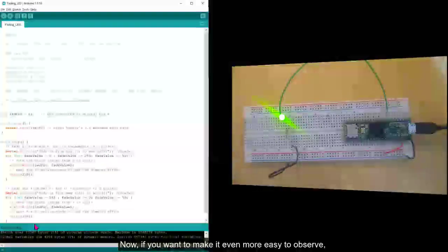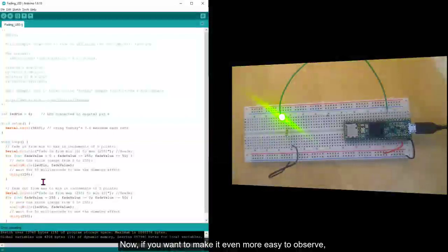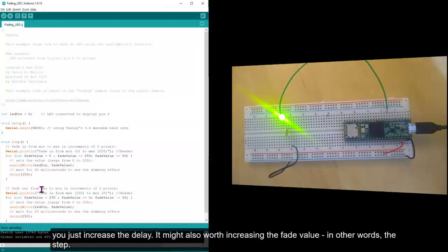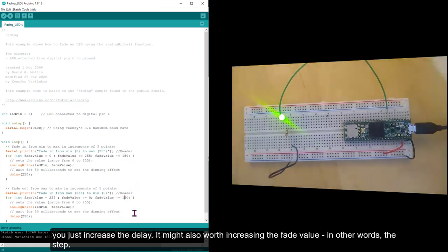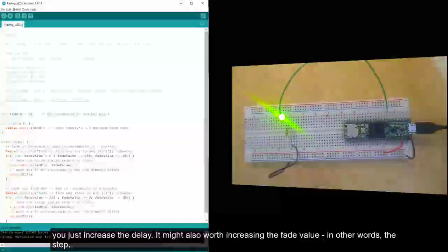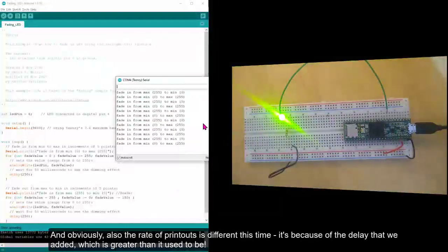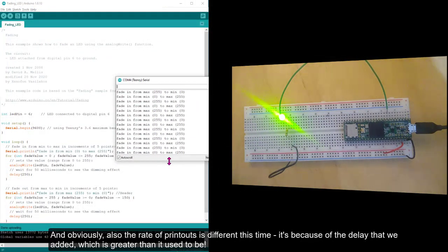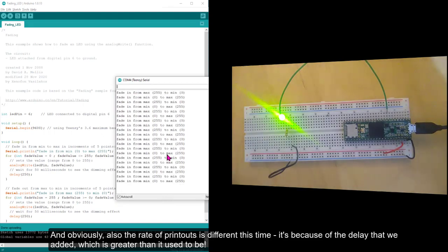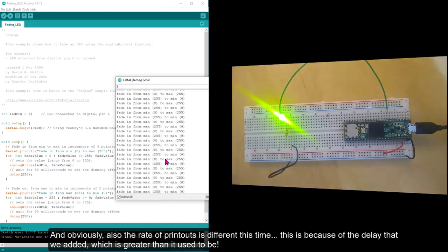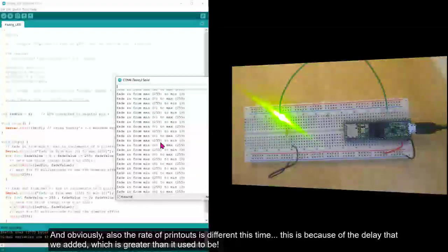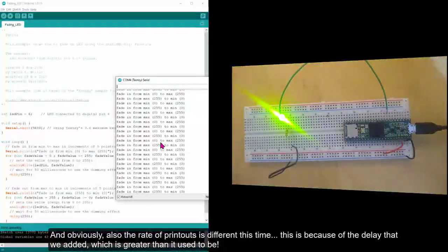Verify, upload, and you see that it behaves differently because it takes more time to fade. Now, if you want to make it even more easy to observe, you just increase the delay. It might also worth increasing the fade value, in other words the step. And obviously, also the rate of printouts is different this time. This is because of the rate of the output being greater compared to what it used to be before.